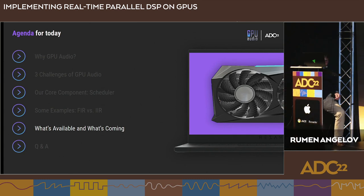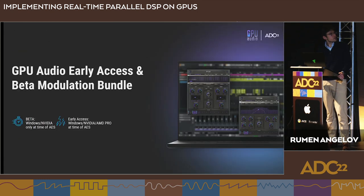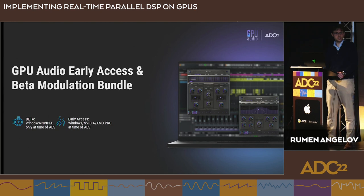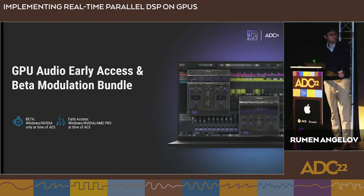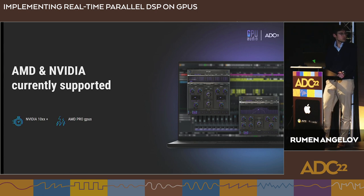We would like to show you what is currently available, what products we've released, and the roadmap for next steps. We have our early access FIR convolution VST3 plugin available for download, and our beta modulation suite with Chorus, Phaser, and Flanger available in VST3 format for Windows. We currently support AMD and NVIDIA GPUs — NVIDIA 10,000 series and upward, and the latest several generations of AMD.